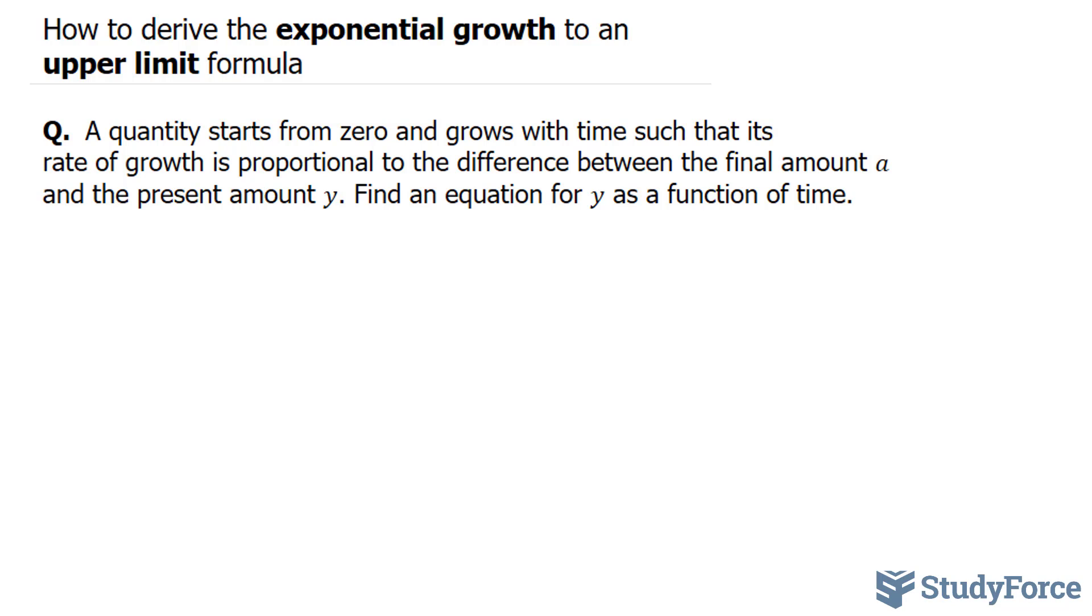The amount present at time t is y, and the rate of growth of y we write as dy over dt. Since the rate of growth is proportional to the amount you start with, a, minus y, we write the differential equation as such.